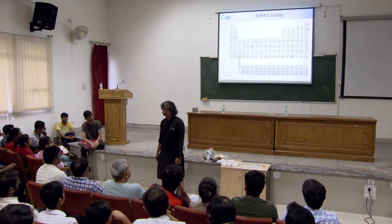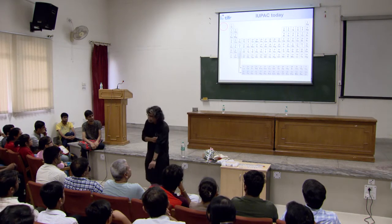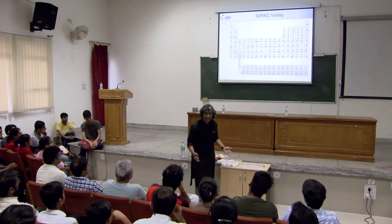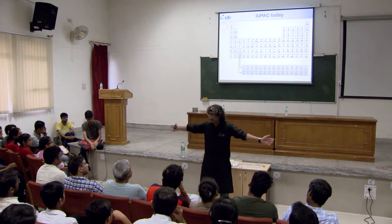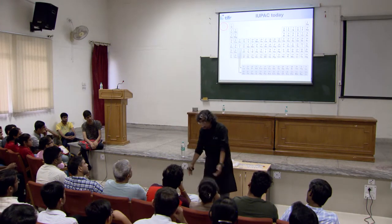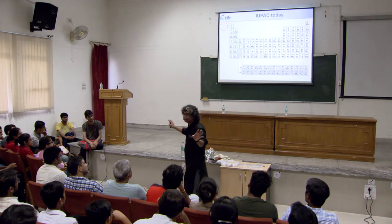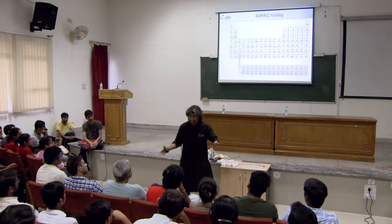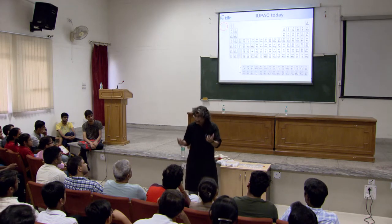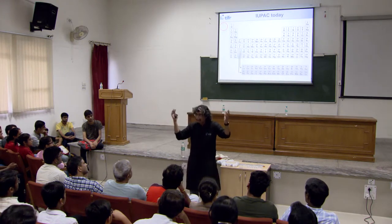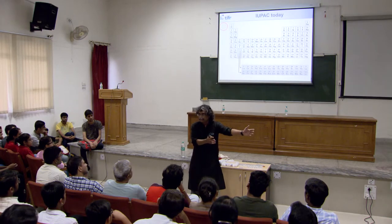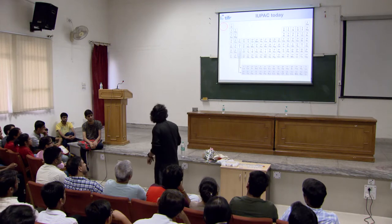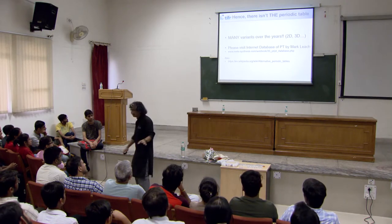How about an element 0? If the periodic table represents the things that make up the world around us, today we know what element 0 would be — it has no protons, it's a neutron. We know that a lot of the universe is made of pure neutronic matter — we have neutron stars. Maybe the neutron should be part of the periodic table. There are many, many variants of the periodic table.